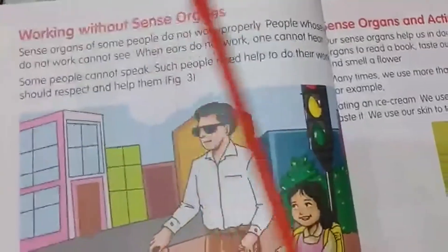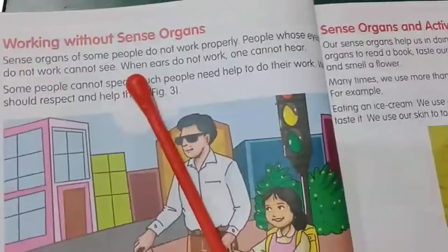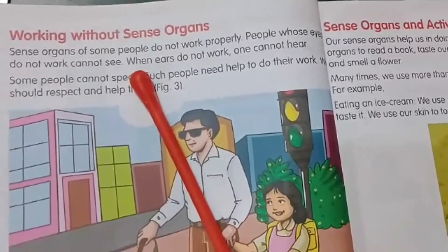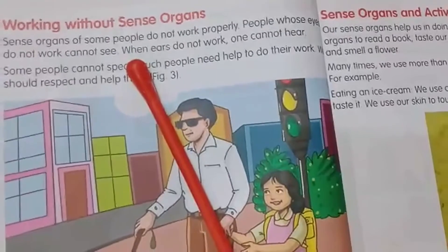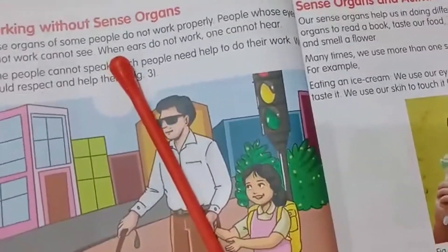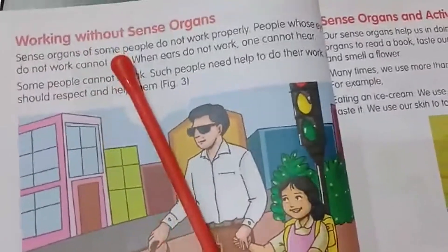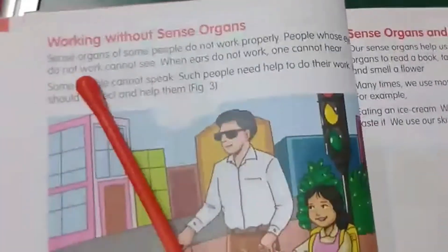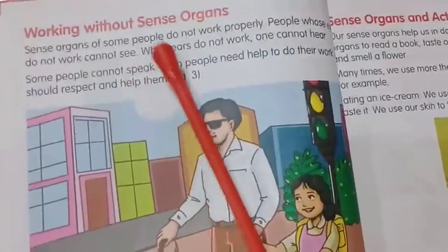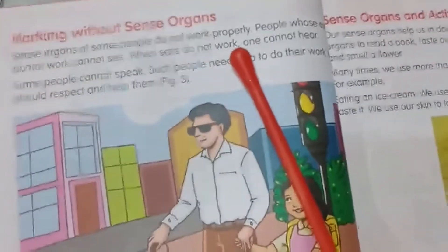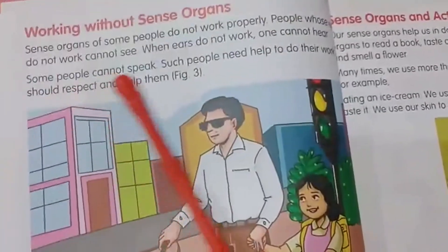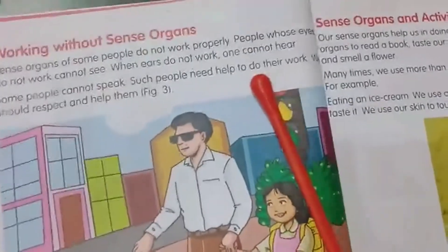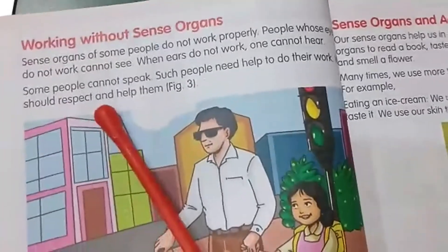Working without sense organs: in this topic we see ways to help people who cannot see, hear, and speak. Sense organs enable us to see, hear, smell, taste, and feel all the good things of life. Sense organs of some people do not work properly. People whose eyes do not work cannot see. When ears do not work, one cannot hear. Some people cannot speak. Such people need help to do their work.